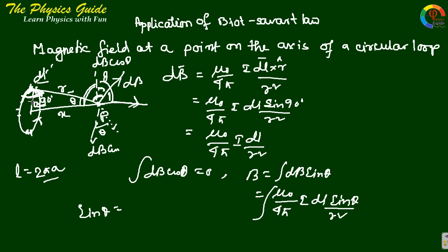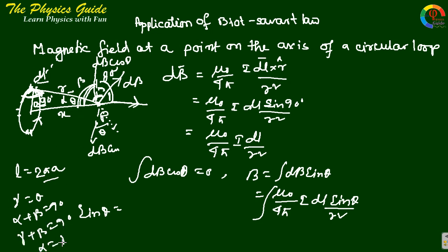Let the angle between the axis and R be alpha, and define angles beta and gamma. Since gamma equals theta, and alpha plus beta equals 90 degrees, and the direction of dB is perpendicular to R, we get gamma plus beta equals 90 degrees, so alpha equals theta.